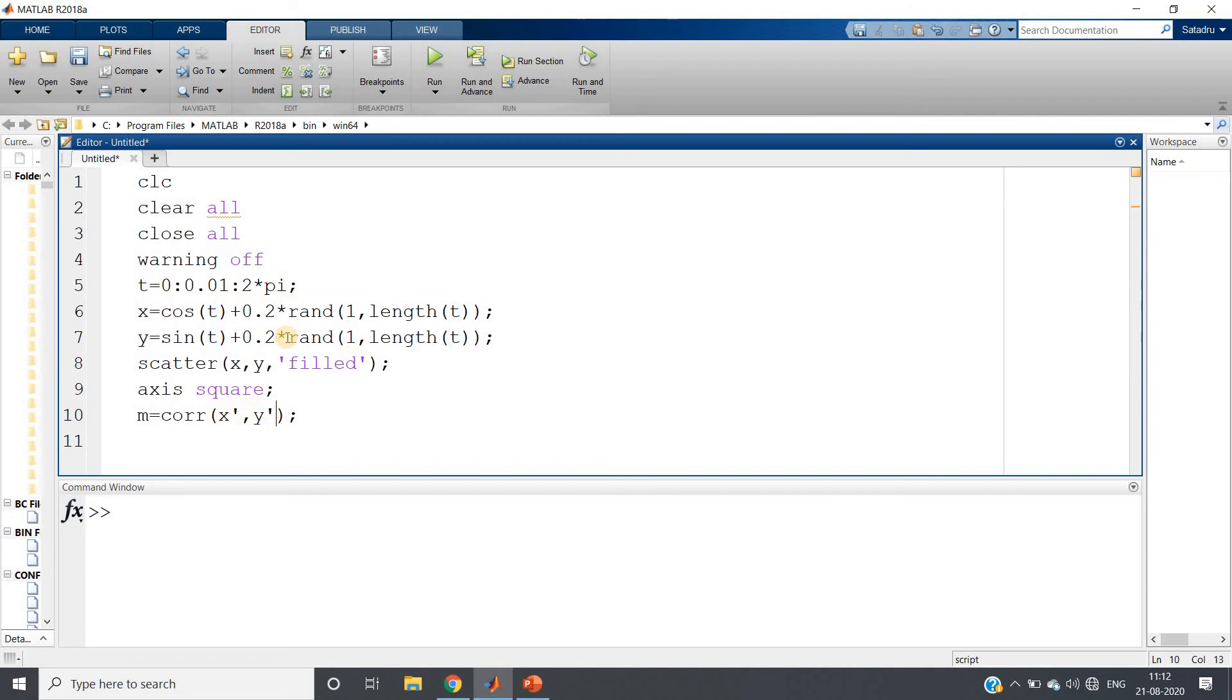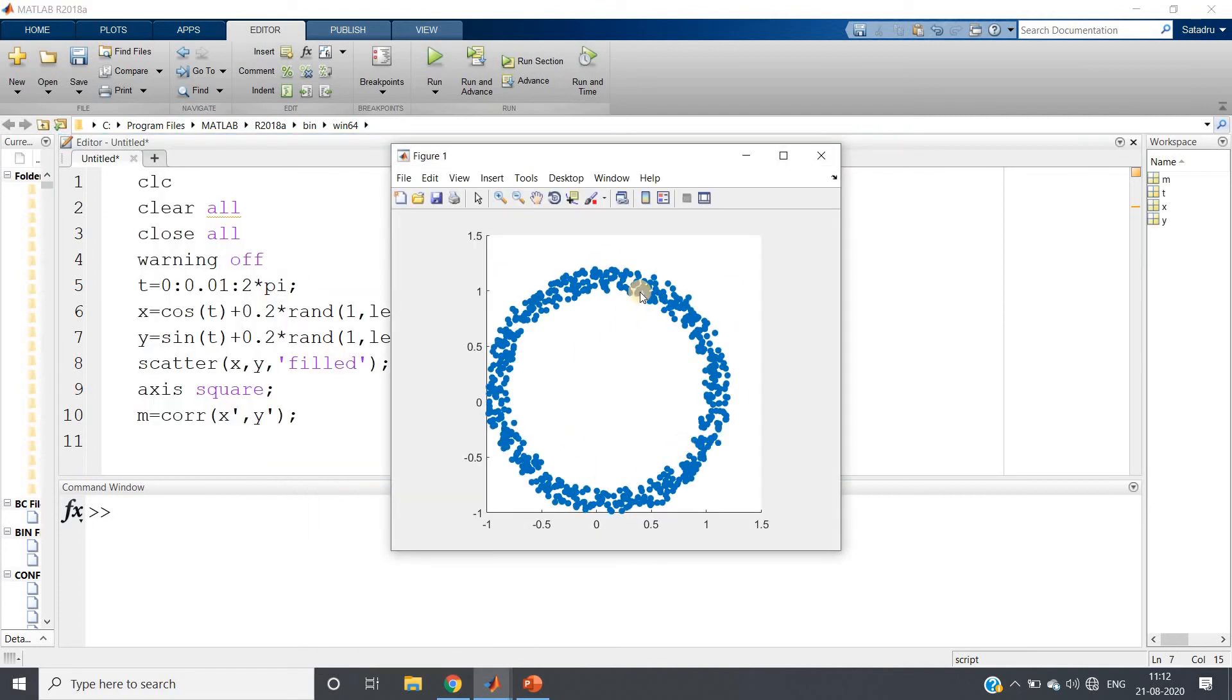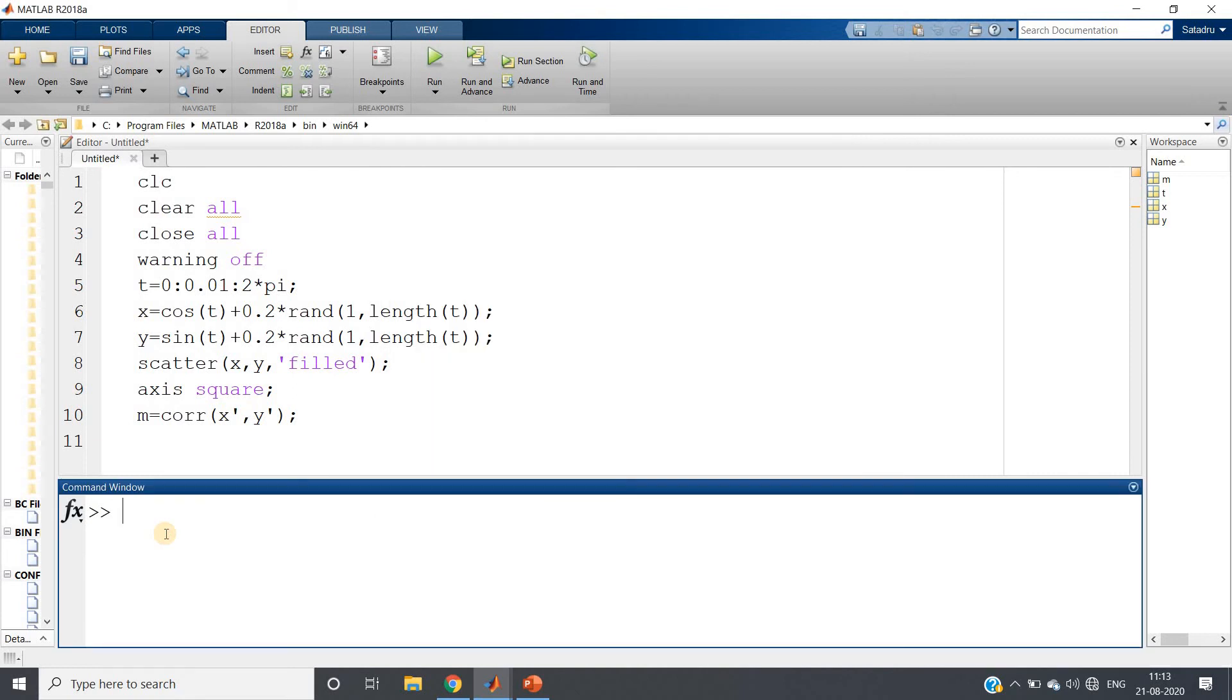Now I am just writing ctrl A and clicking run the file selection. So you can see that two variables x and y are strongly related here but using a non-linear relationship. But if you check the correlation coefficient value m and I am hitting enter, it is minus 0.0102.